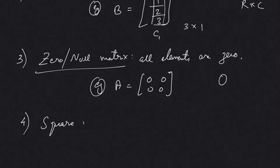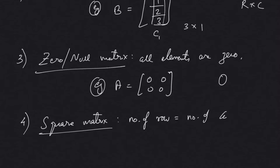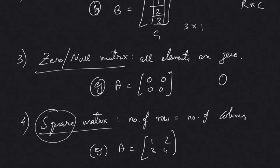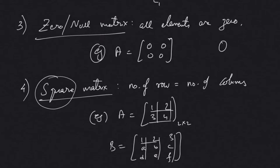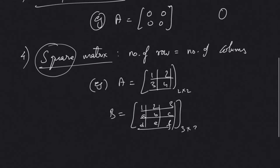Next we have a square matrix. A square matrix is a matrix in which the number of rows is equal to the number of columns. For example, a 2 by 2 matrix like 1, 2, 3, 4 — number of rows equals number of columns. We can also have a 3 by 3 matrix like 1, 2, 3, A, B, C, D, E, F. Students should see to it that the alignment is written properly, with rows and columns maintained correctly. This is a 3 by 3 matrix.